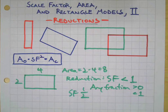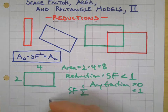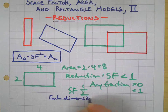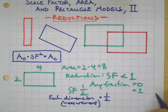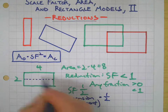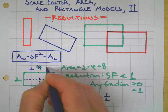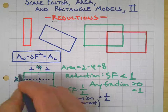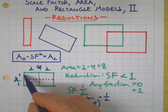Scale factor one-half — why one-half? Because it's super easy and we can see what's going on. Scale factor one-half means each dimension gets cut in half. Dimensions is another word for measurement. So with our rectangle model, the four is cut in half — two and two — and the two gets cut in half — one and one.